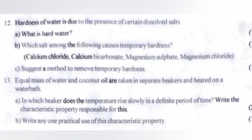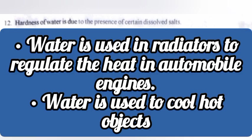B: Write any one practical use of this characteristic property. Answer: Water is used in radiators to regulate the heat in automobile engines. Water is used to cool hot objects.